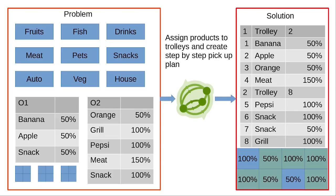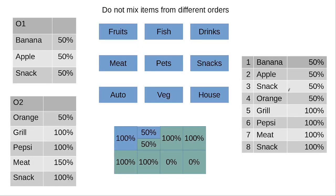Let's consider an example. The first idea that comes to mind is just to take two orders, merge them, and just pick up what you can. Here you could see we pick up banana and apple, combine them into box number one, then we pick up snack, then pick up orange. Here the first constraint will appear, because we cannot store products from different orders in one box — so this needs to be avoided.